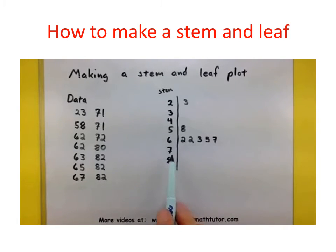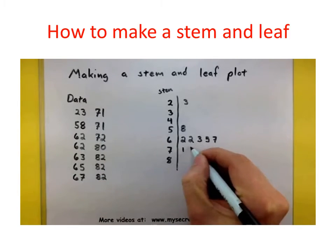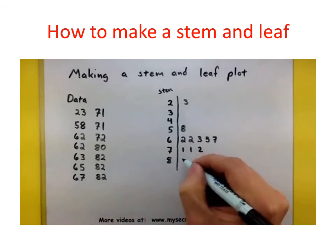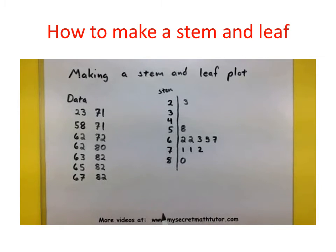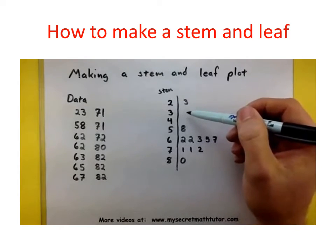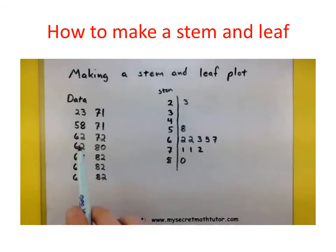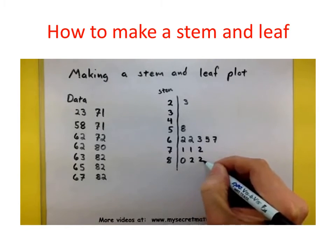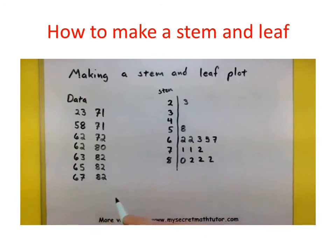Let's finish off the 70s. I've got a 71, 71, and a 72 — so 1, 1, and 2. And it looks like I have some 80s: an 80, 82, 82, 82. Now, with the 80, make sure you put in a 0. You don't want to leave it blank, because a blank means you don't have any of those data points. But we do have an 80, so we put the 0. And three 82s.